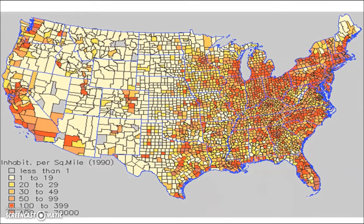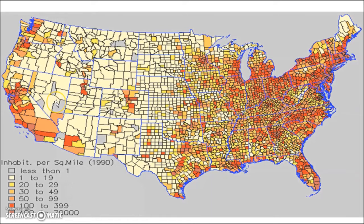Population density throughout the United States is not evenly distributed. You're going to have much higher population densities out here on the East Coast. You can probably identify areas like Los Angeles in California. Here's the Mississippi River, and everywhere east of the Mississippi River is much more densely populated than areas like Wyoming, Utah, and Nevada — all very sparsely populated areas.